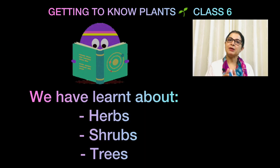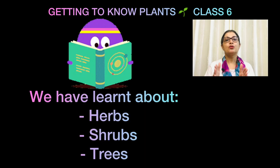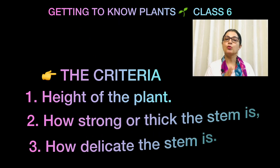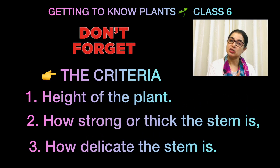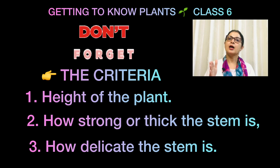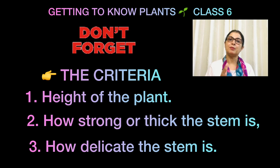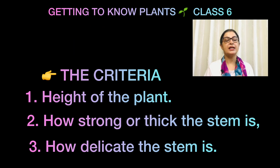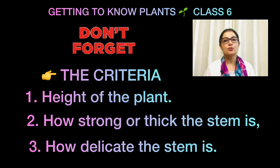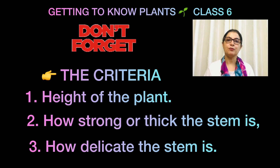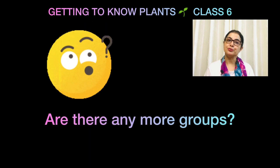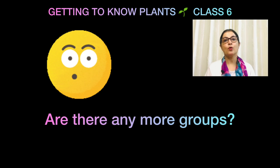So what have we studied till now? Plants can be divided into three main categories: herbs, shrubs, and trees. Aur unko decide karne ke liye, the criteria are: their height, and how thick or how delicate the stem is. Now we know the different criteria and the different groups. In addition to these three groups, we also have two other types of plants — creepers and climbers.